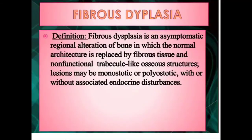When discussing fibrous dysplasia, you can go through the textbook of oral medicine by Anil Ghom or by Ravikiran Ongole. Fibrous dysplasia is defined as an asymptomatic regional alteration of the bone in which normal architecture is replaced by fibrous tissue and non-functional trabecle-like bone. The lesions may be monostotic or polyostotic, with or without associated endocrine disturbances.